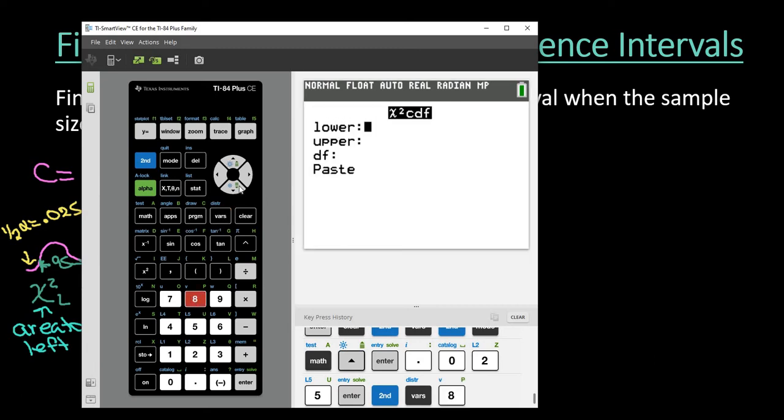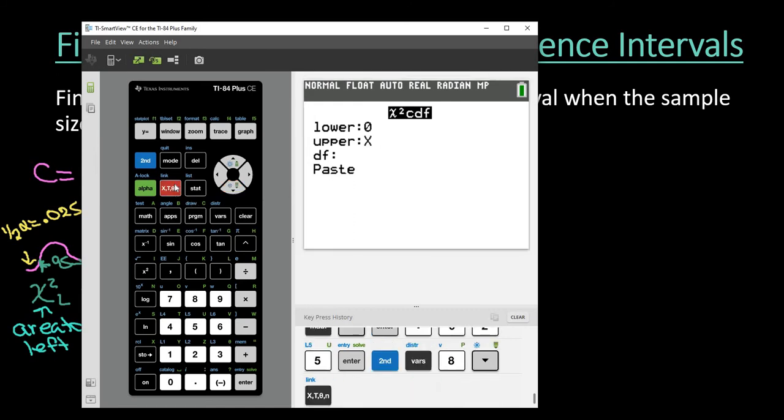My lower is going to be zero. My upper is going to be where I want it to stop. Well I don't know where I want it to stop. That's my x. That's my unknown. That's what I'm trying to figure out.